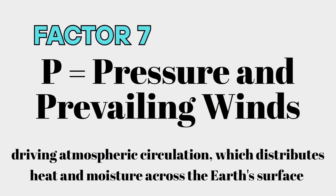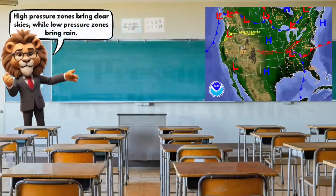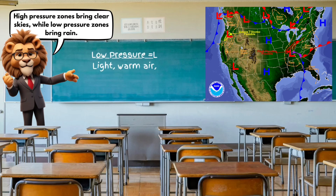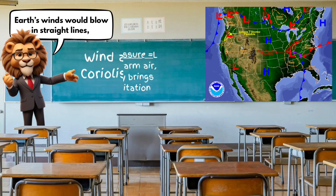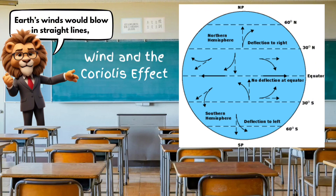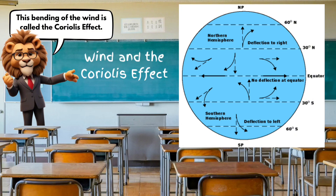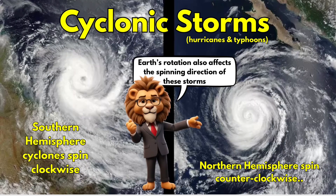Factor seven: pressure and prevailing winds. High pressure zones bring clear skies, while low pressure zones bring rain. Earth's winds would blow in straight lines, but since the Earth rotates, they are turned at an angle. In the northern hemisphere, they turn to the right; in the southern hemisphere, they turn to the left. This bending of the wind is called the Coriolis effect. Earth's rotation also affects the spinning direction of these storms.